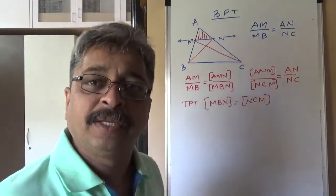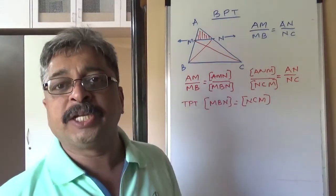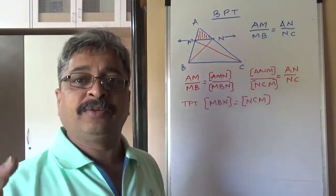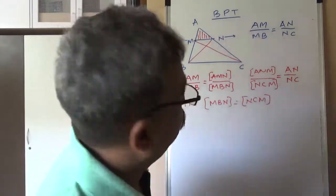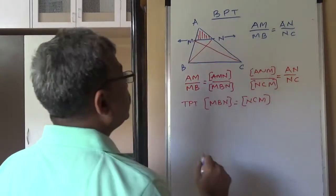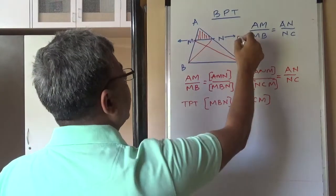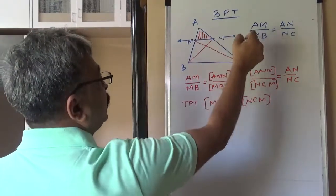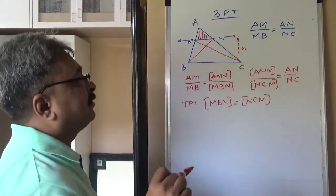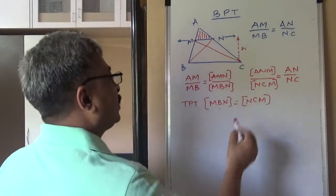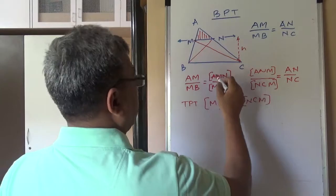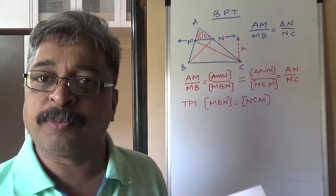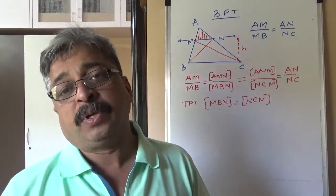If we do this, then our basic proportionality theorem is done. Pause the video. Try to do it independently. If you have done it, very good. Now, look at the solution. Of course, these two areas are equal because if we consider MN as base and distance between two parallel lines as height, then MN into H by 2 is the area of this triangle as well as MN into H by 2 is the area of this triangle and hence both these areas are equal. Numerators are equal, denominators are equal, therefore ratios are equal and hence basic proportionality theorem is proved.